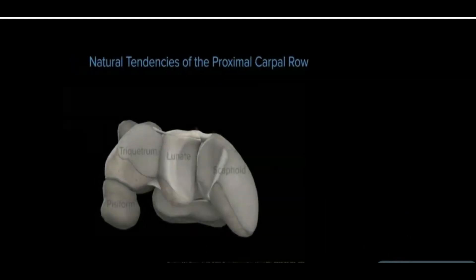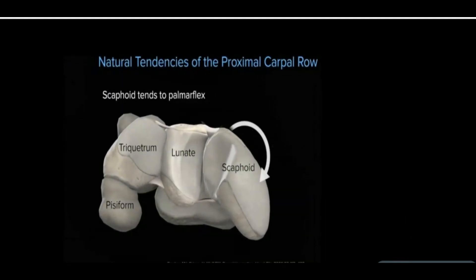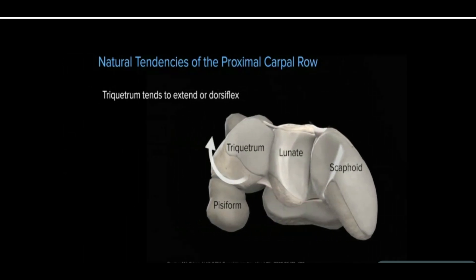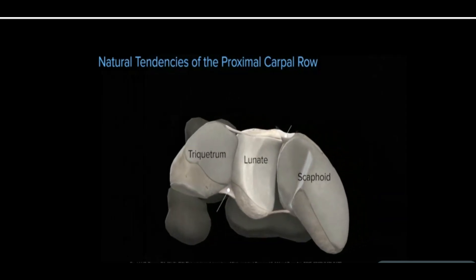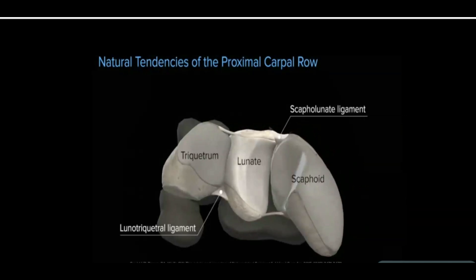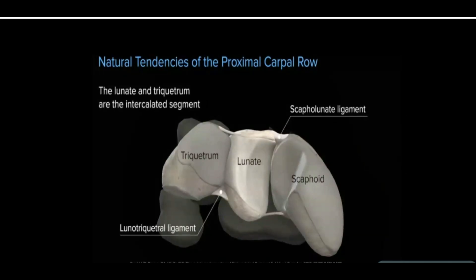Within the proximal carpal row, the natural tendency of the scaphoid is palmar flexion. Oppositely on the ulnar side, the natural tendency of the triquetrum is dorsiflexion. In terms of biomechanics, after many years of discussing different theories, the lunate and triquetrum are considered the so-called intercalated segment. The lunate is an intercalated bone.